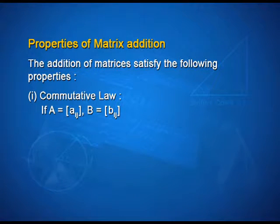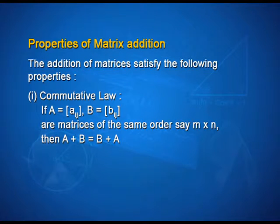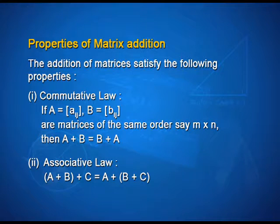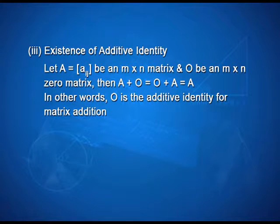First, the commutative law: if A and B are matrices of the same order, say m by n, then A plus B is equal to B plus A. Second, the associative law: A plus B plus C is equal to A plus B plus C.